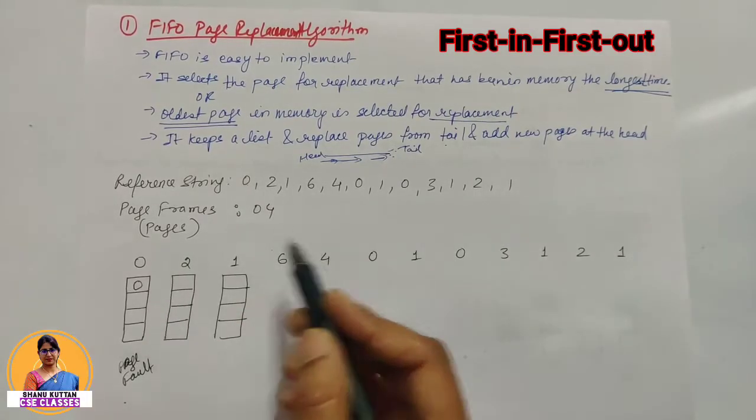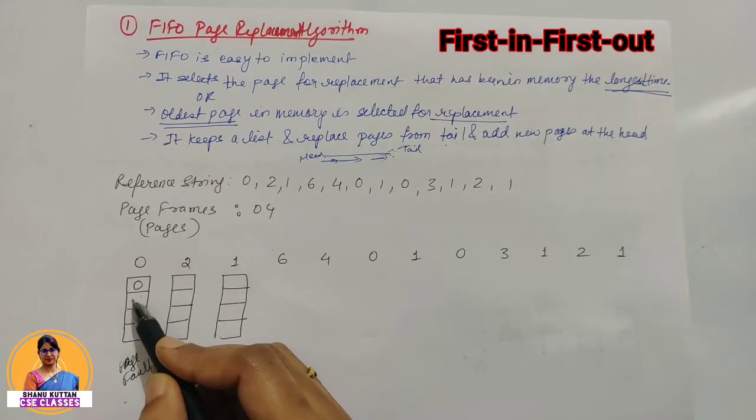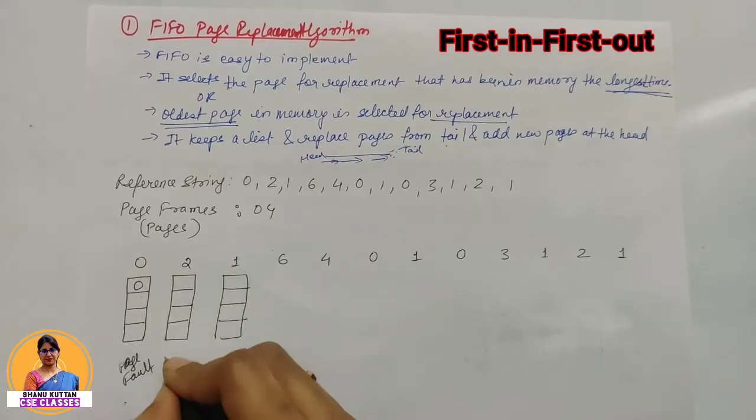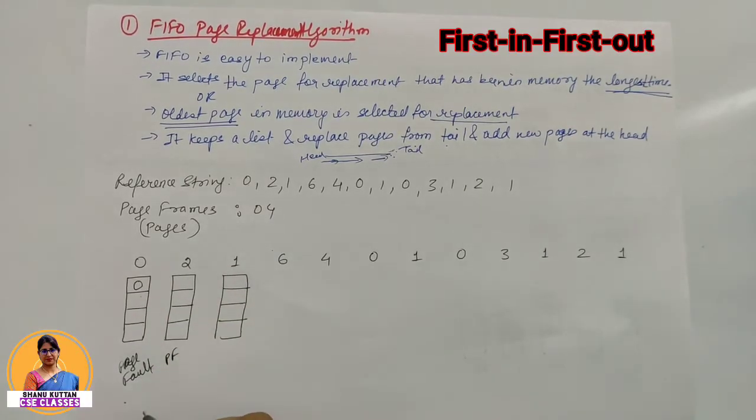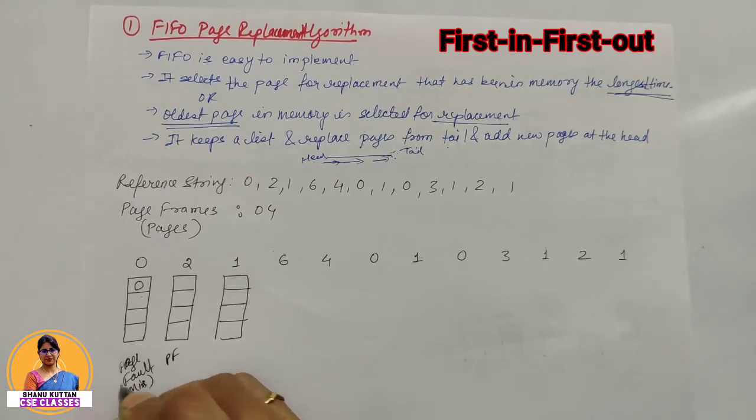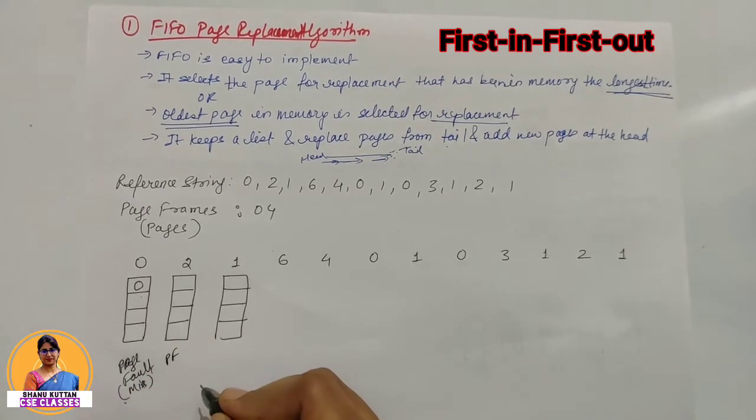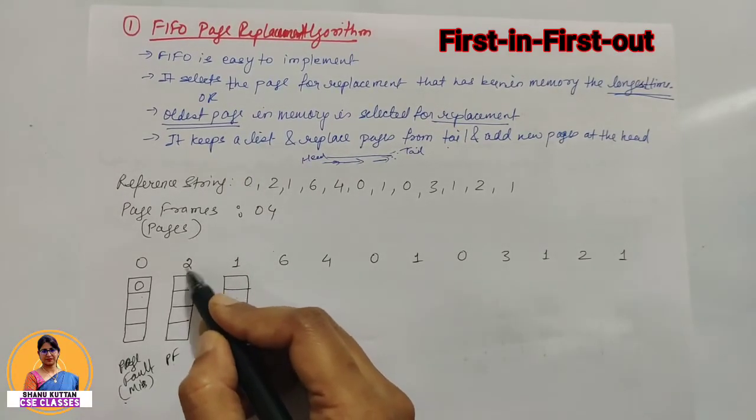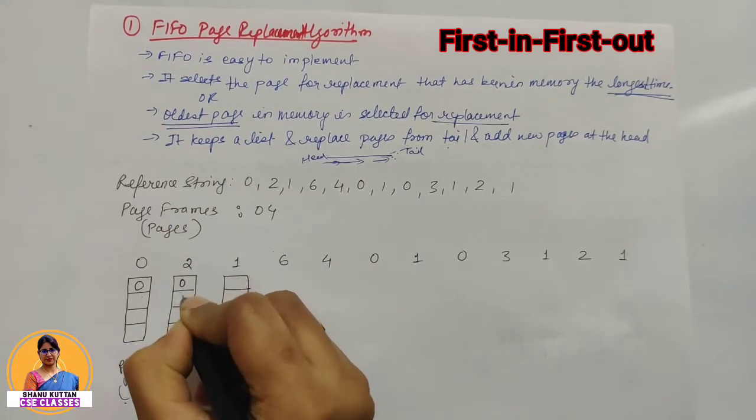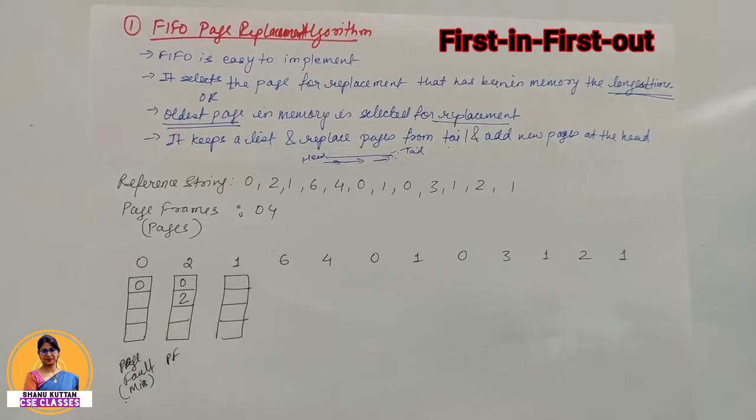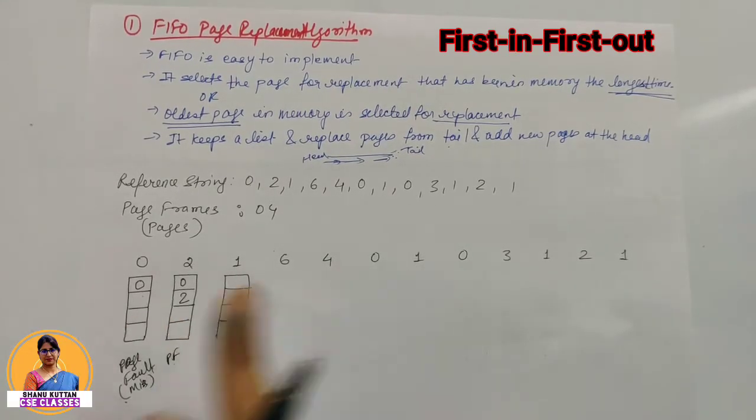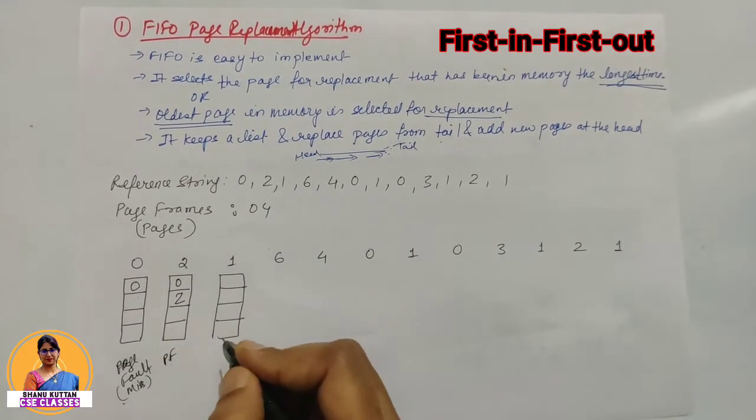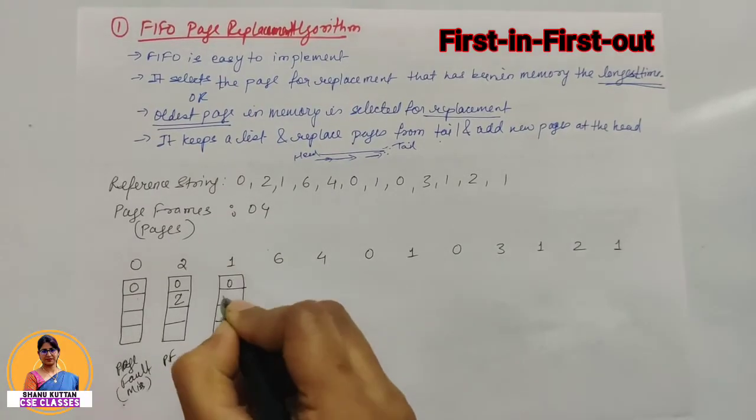Here it was not present, so we have to store it in the main memory from secondary memory. Now next page is 2. Currently we have 0 present but 2 is not present, so again page fault. We store 2 after 0 in memory. Next number is 1. Is 1 present? No, so page fault. We store 1 after 0 and 2.